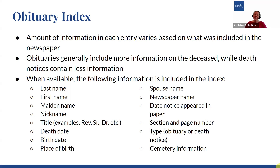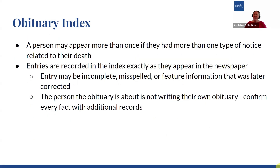You'll also get the newspaper name, the date that notice appeared in the paper, what section and page number it appeared in, what type it is — whether it's an obituary, a death notice, or a news story — and then information on the cemetery if it's included in their notice. A person may appear more than once if they had more than one type of notice related to their death in the newspaper. For example, they could have an obituary and a news story, an obituary and a death notice, or all three. Each would be a separate entry.